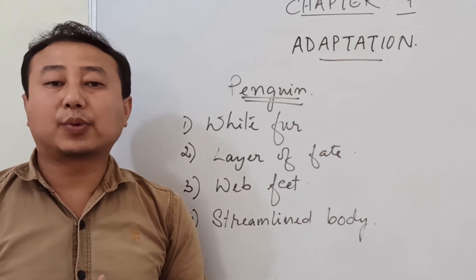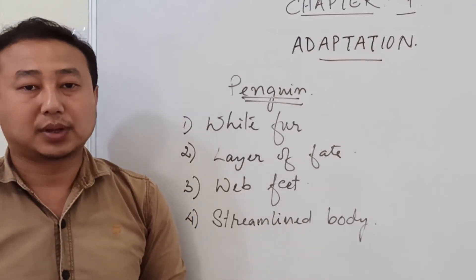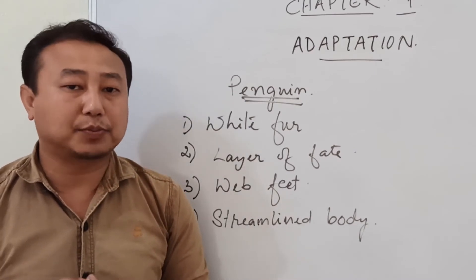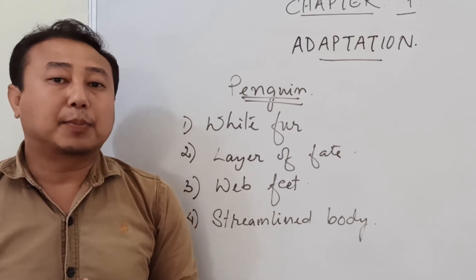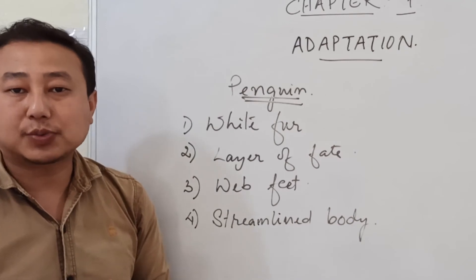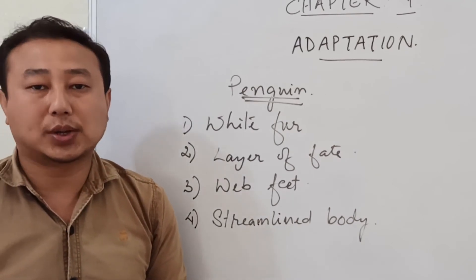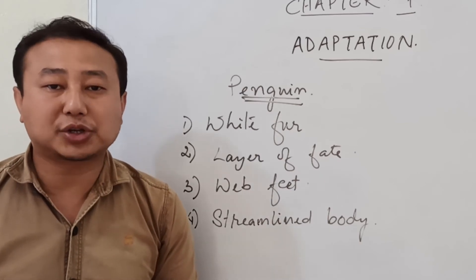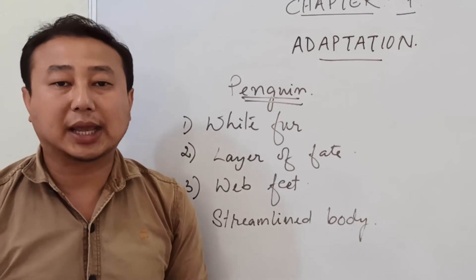The last adaptive feature in the penguin discussed today is the streamlined body. A streamlined body has a special shape with a pointed beak. Because of this streamlined body, the penguin is able to cut through the water, aiding in swimming. The streamlined body reduces the friction of water, allowing the penguin to swim easily.